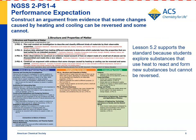For the NGSS Standard 2-PS1-4: construct an argument from evidence that some changes caused by heating and cooling can be reversed and some cannot. In lesson 5.1, students looked at changes caused by heating and cooling that can be reversed, and here in lesson 5.2, they're looking at a change that cannot be reversed. They saw that cookie dough can be heated, a chemical change occurs, gas is produced, and the substance changes to form the cookie and it can't go back to cookie dough. They see the same thing in the animation with popcorn.